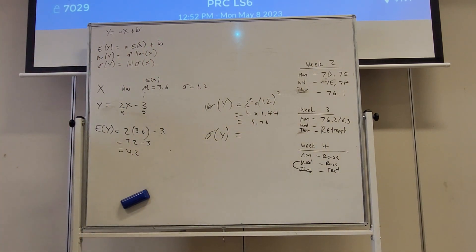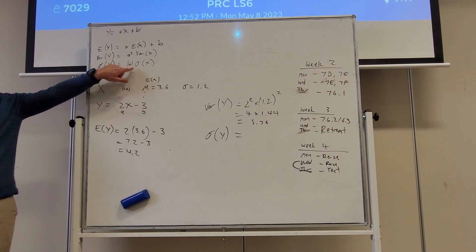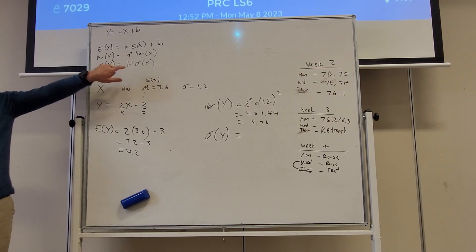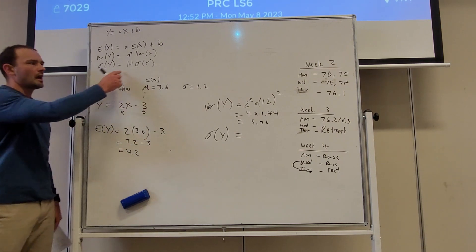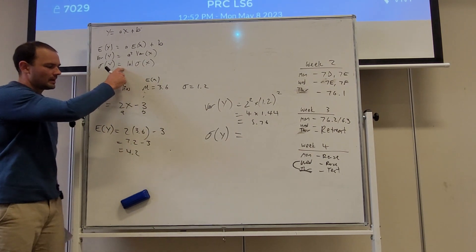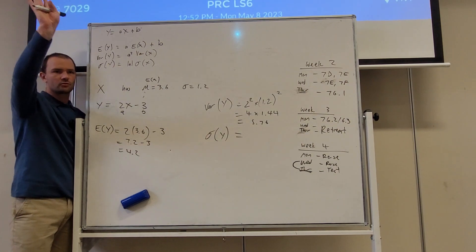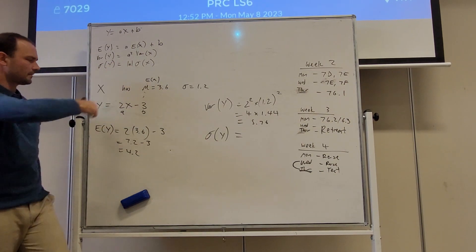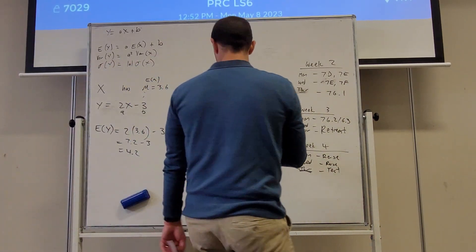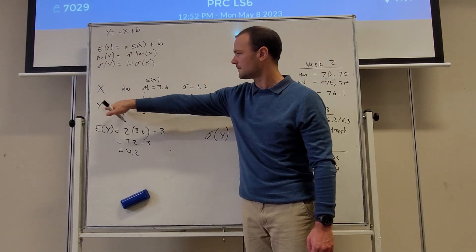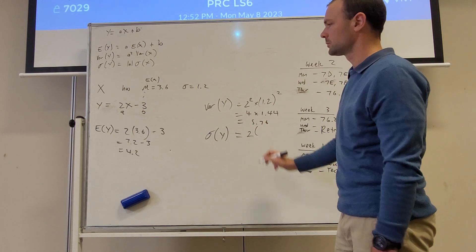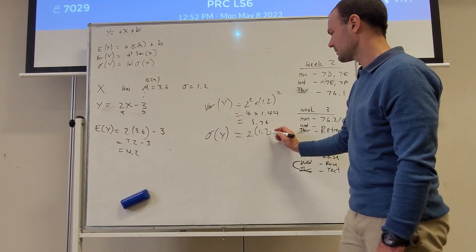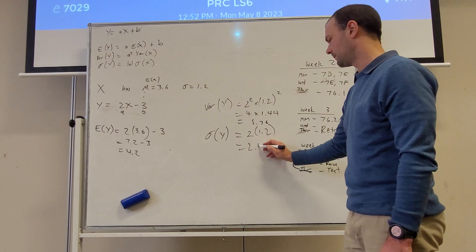And then for the standard deviation of y is equal to, now this symbol here, hopefully we've seen it before, but it means the modulus, it means the absolute value, it means the size, the magnitude. How big is that number a? It's the modulus of a times by the standard deviation of x. So the size of this number here, 2, is 2. And we're multiplying it by the standard deviation of x, which is 1.2. We've got 2.4.